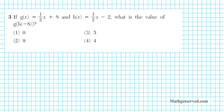Problem 3: if g of x equals one-half x plus 8 and h of x equals one-half x minus 2, what is the value of g of h of negative 8? This is a composite function evaluated at a particular x value. There are two ways to do this: compose the functions first and then plug in, or evaluate the inner function first and plug the result into the outer function. I'll use the second method.